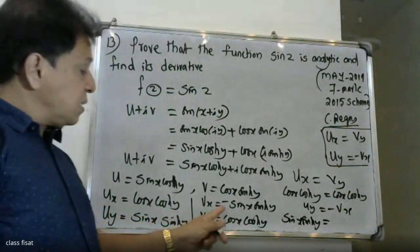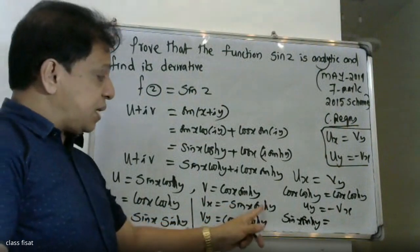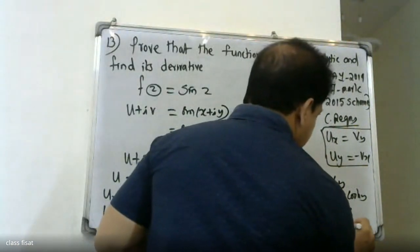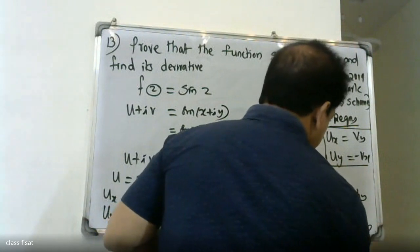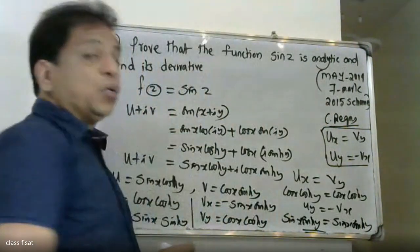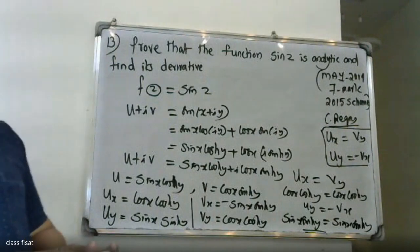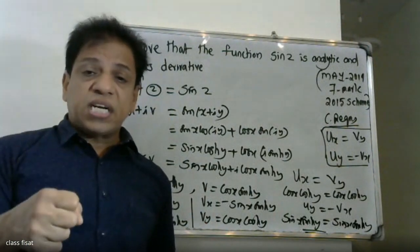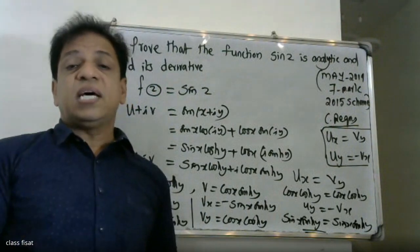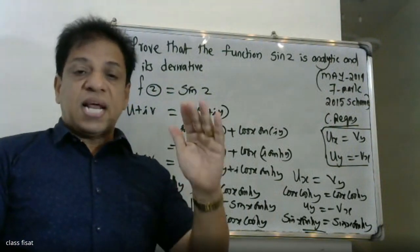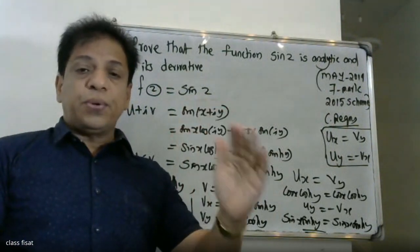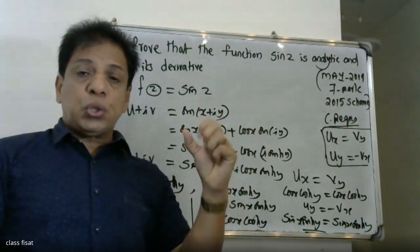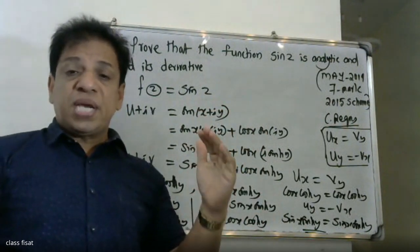Checking the second Cauchy-Riemann equation: uy equals sin(x)sinh(y) and vx equals minus sin(x)sinh(y), so uy equals minus vx. Both Cauchy-Riemann equations are satisfied. Therefore, the given function sin(z) is analytic.